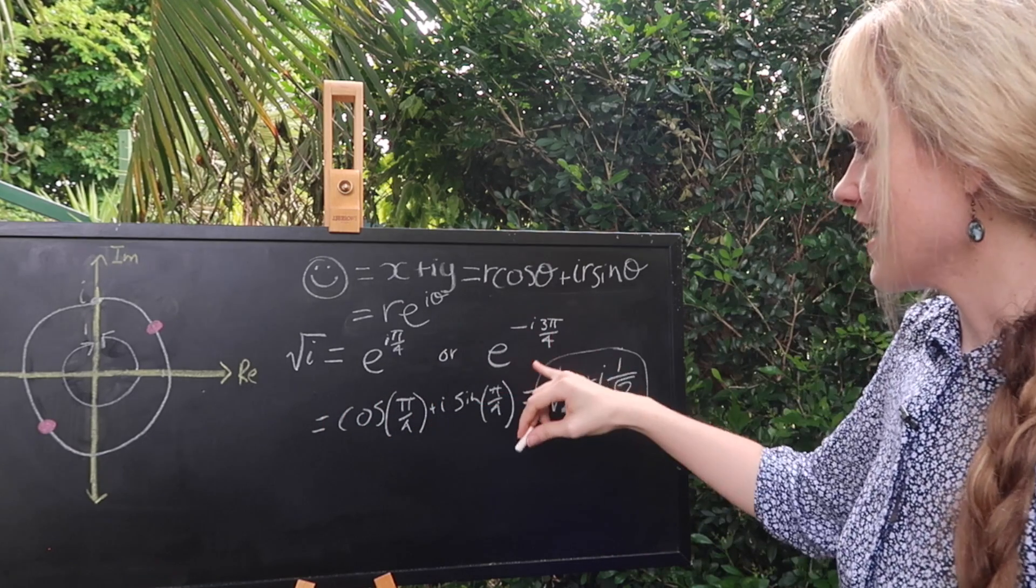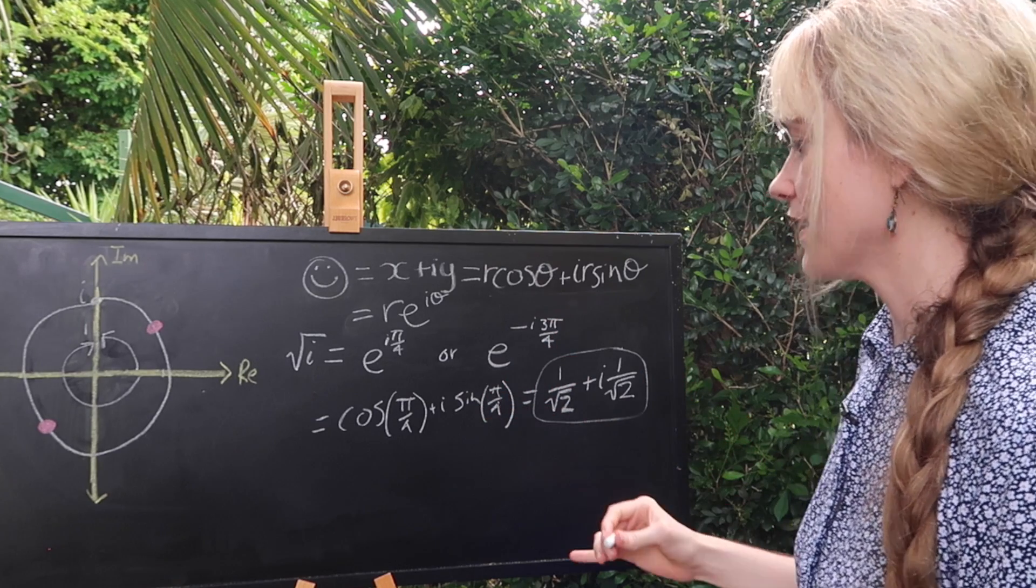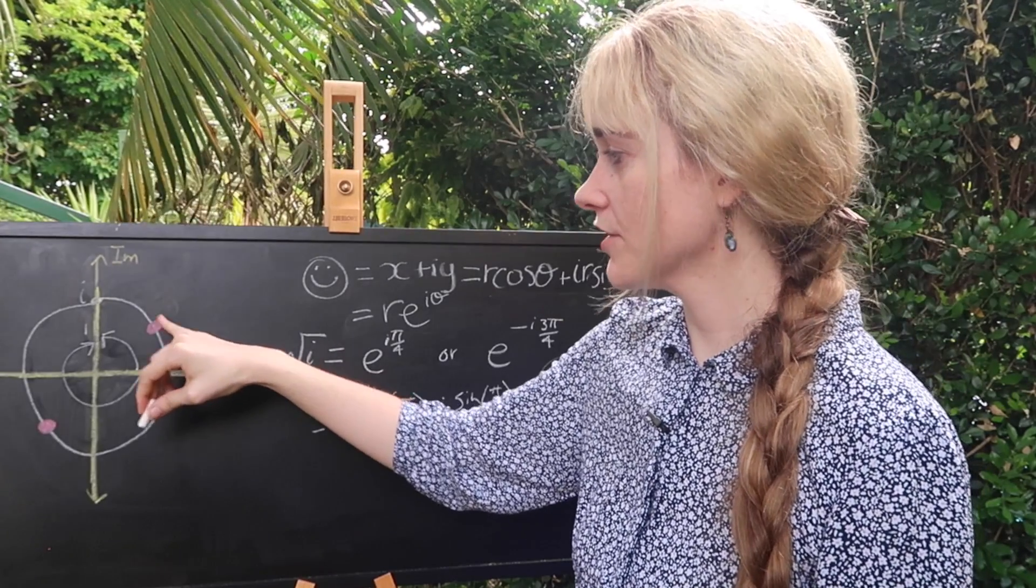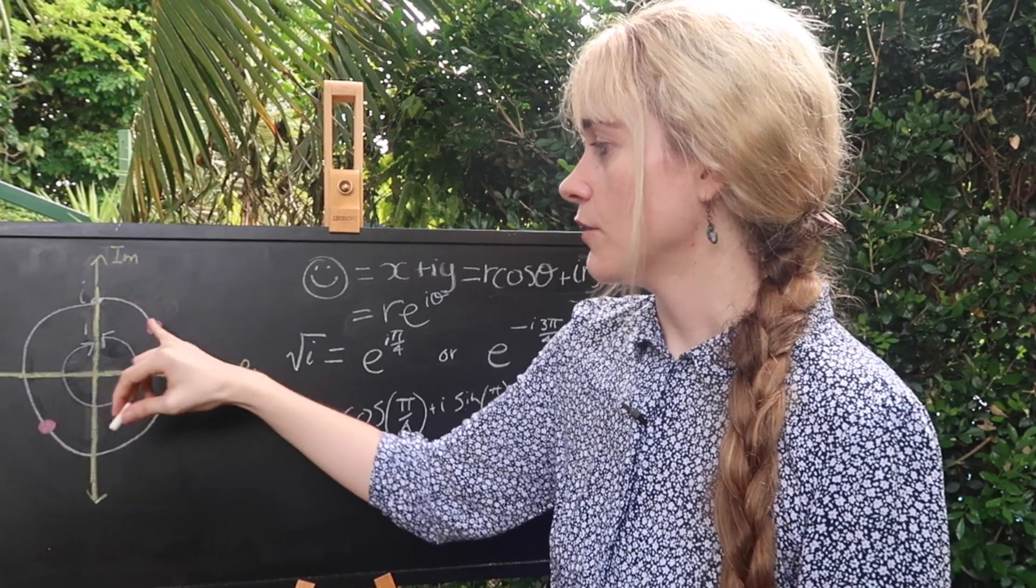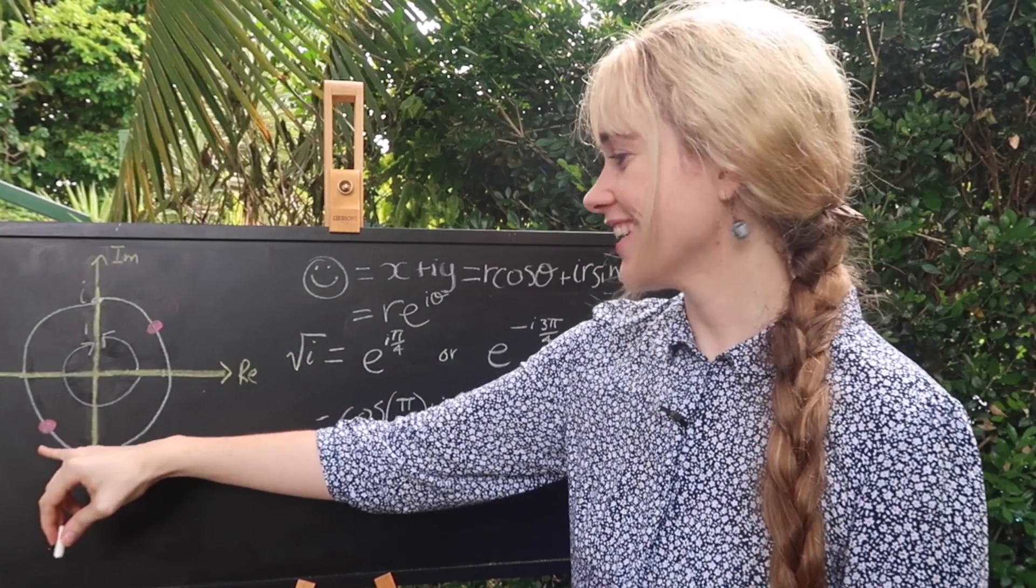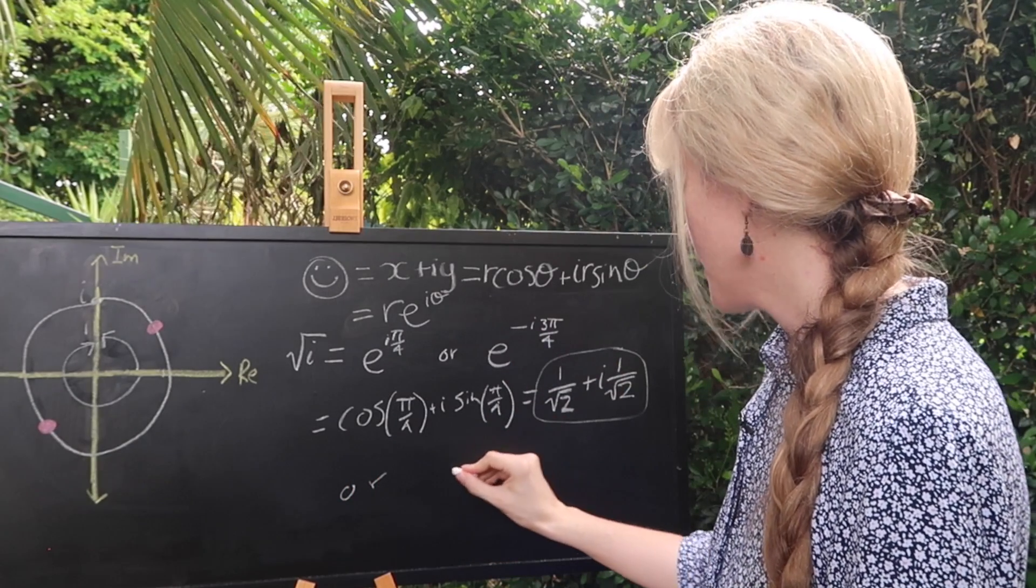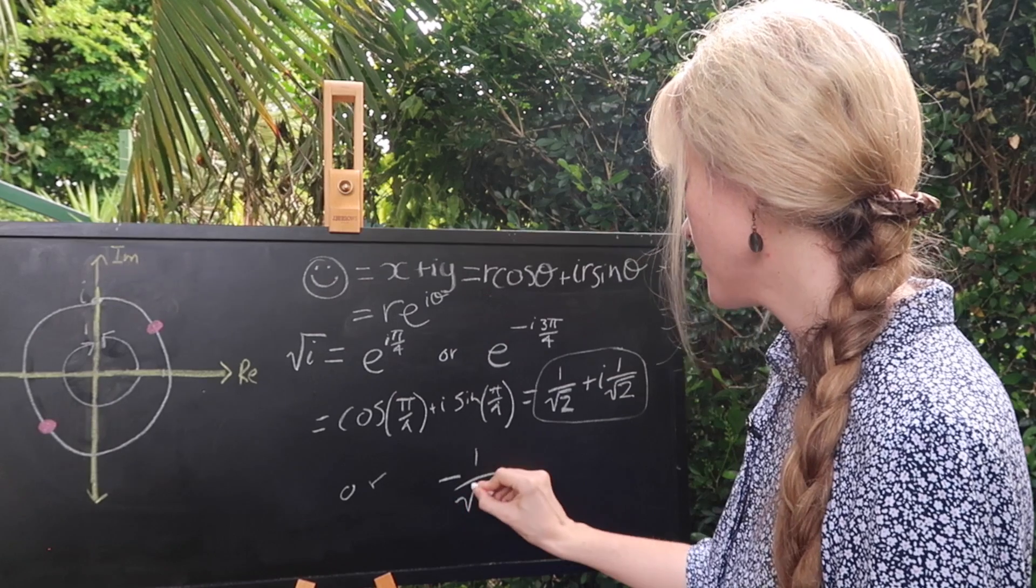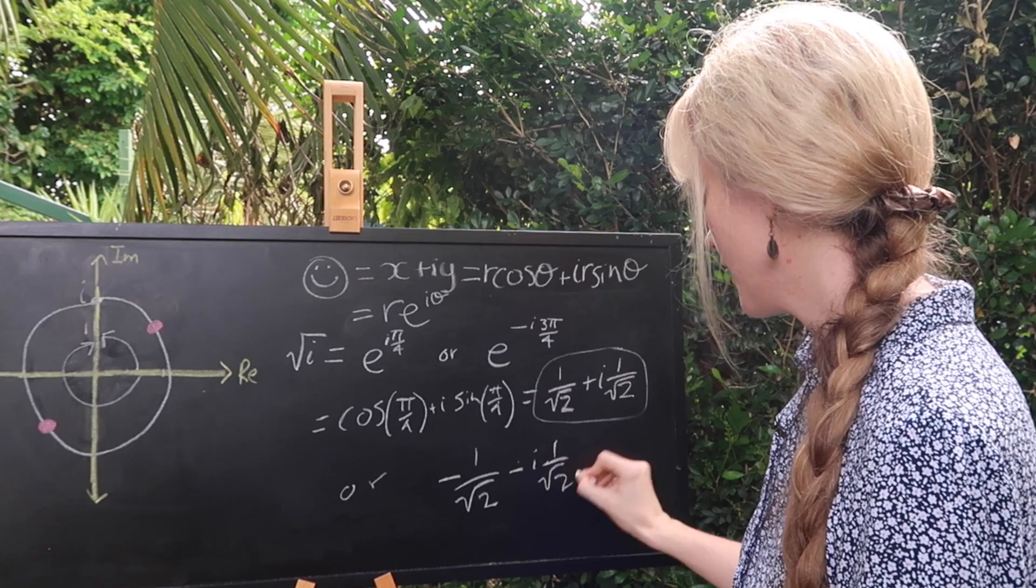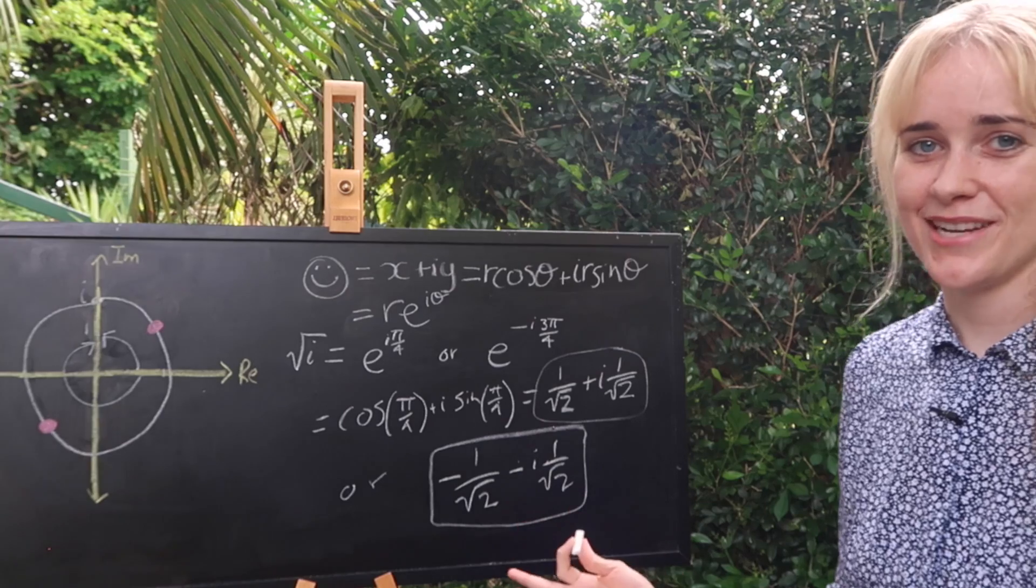Now you could do the exact same thing using a negative three quarters pi as our argument in here or you can look at our visual plot and know that if this was our first solution our second solution will be the negative of both of these values because we're in the opposite quadrant here on the graph. So our second solution will just be minus one over root two minus i one over root two and those will be our two solutions as shown there for the square root of i.